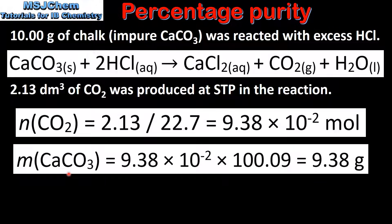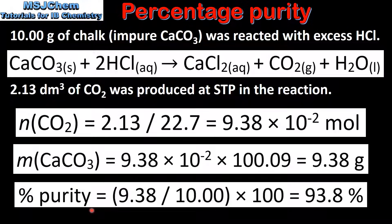We calculate the mass of calcium carbonate that reacted with the excess hydrochloric acid by multiplying the amount in moles by the molar mass of calcium carbonate, which is 100.09 grams per mole. This gives us 9.38 grams. Finally, we calculate the percentage purity: the mass of the pure calcium carbonate, 9.38 grams, divided by the total mass of the impure sample, 10.00 grams, multiplied by 100, gives us 93.8%.